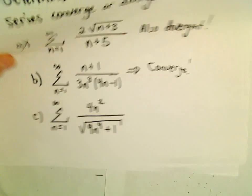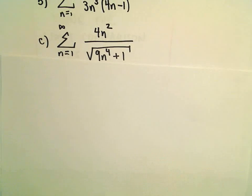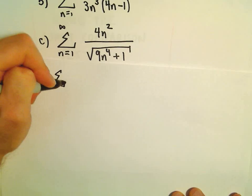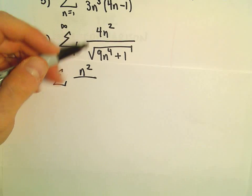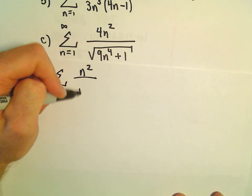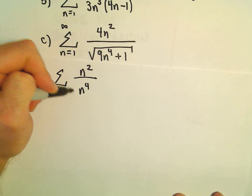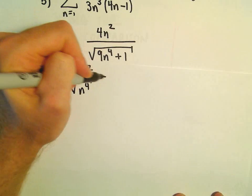We could use the limit comparison test. If I used the limit comparison test, I would keep the n squared from the numerator. You can keep the 4 or not, it doesn't really matter. In the denominator, we've got an n to the 4th, but if we square root that, we get n squared.